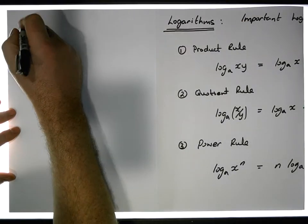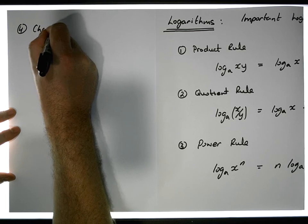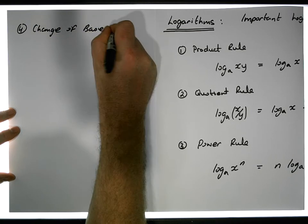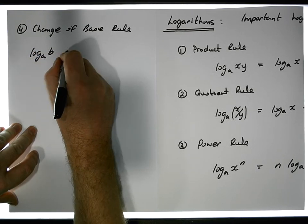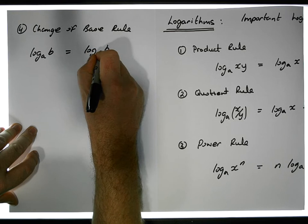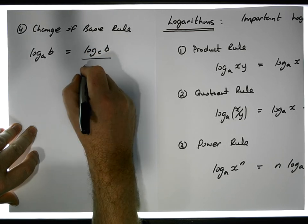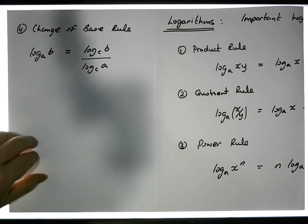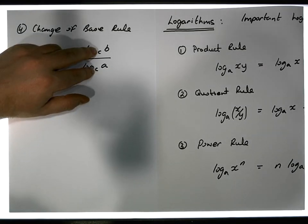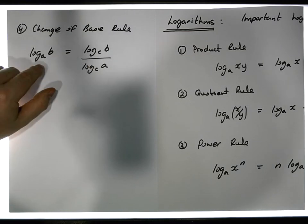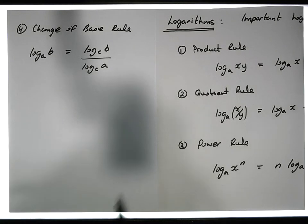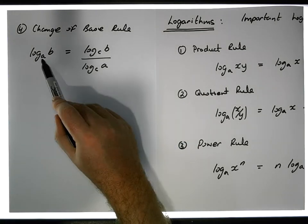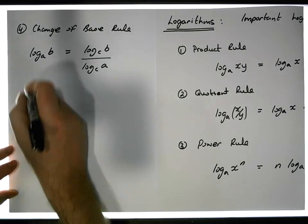Rule four is the change of base rule. It says that log of b to the base a is the same as log of b to the base c, divided by log of a to the base c, where c is a new base. This allows us to introduce a new base c, and it's often convenient to make c equal to either a or b.